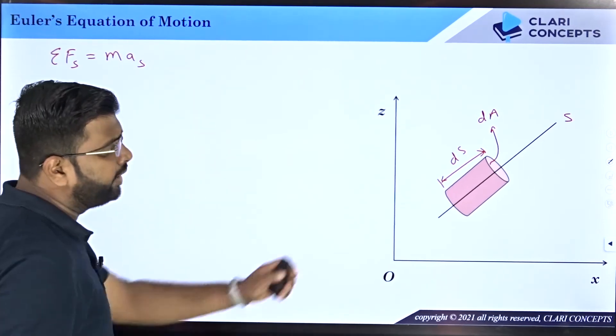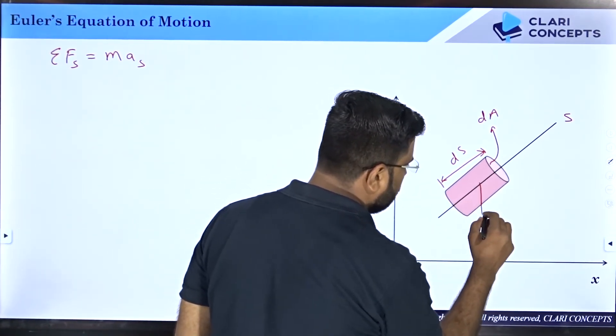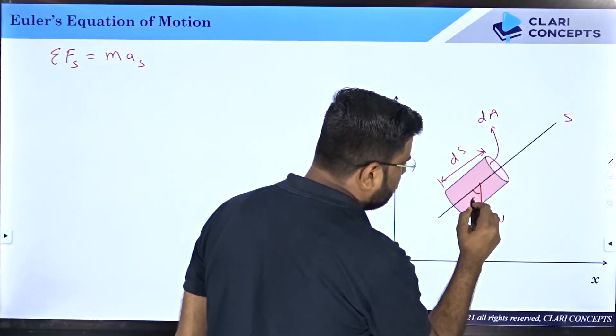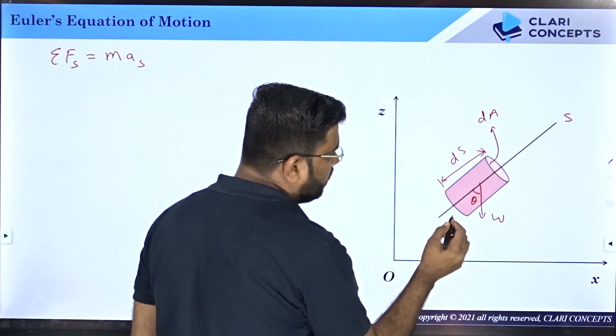One of the major forces acting on the element will be weight force which is downward w. Let us say that the angle between this and this is theta, and now this is weight body force. Now what are the surface forces?